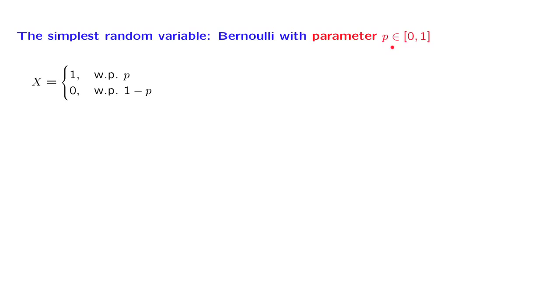which is a given number that lies in the interval between 0 and 1. Using PMF notation, we have the probability of 0 being equal to 1 minus p, and the probability of taking the value 1 equal to p.